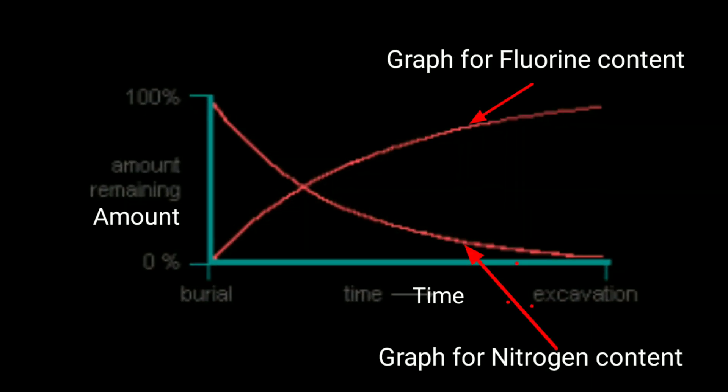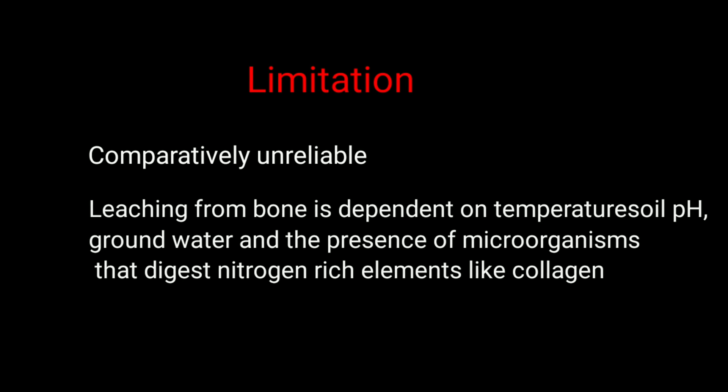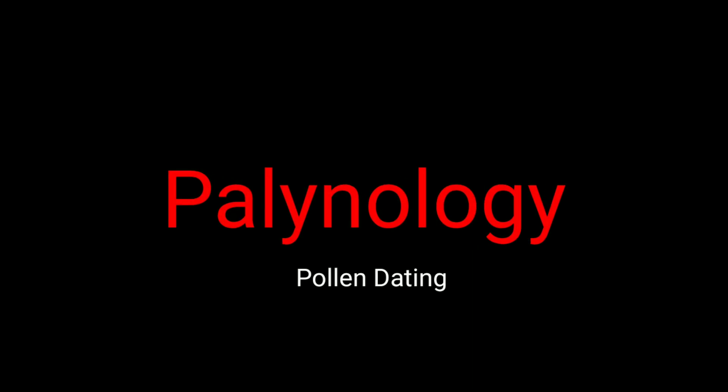The lesser the nitrogen content, the older the fossil. Compared to other dating techniques, nitrogen dating can be unreliable because leaching from bone is dependent on temperature, soil pH, groundwater, and the presence of microorganisms that digest nitrogen-rich elements like collagen.